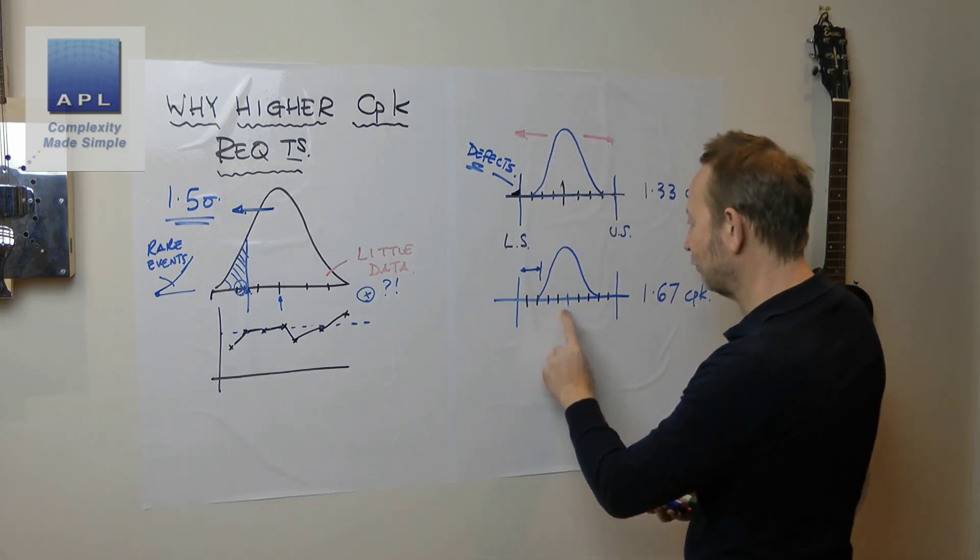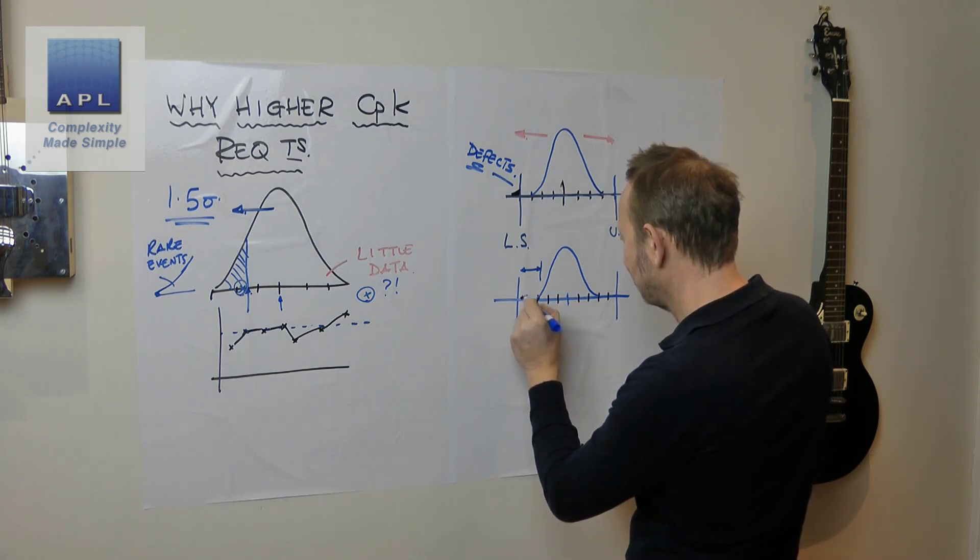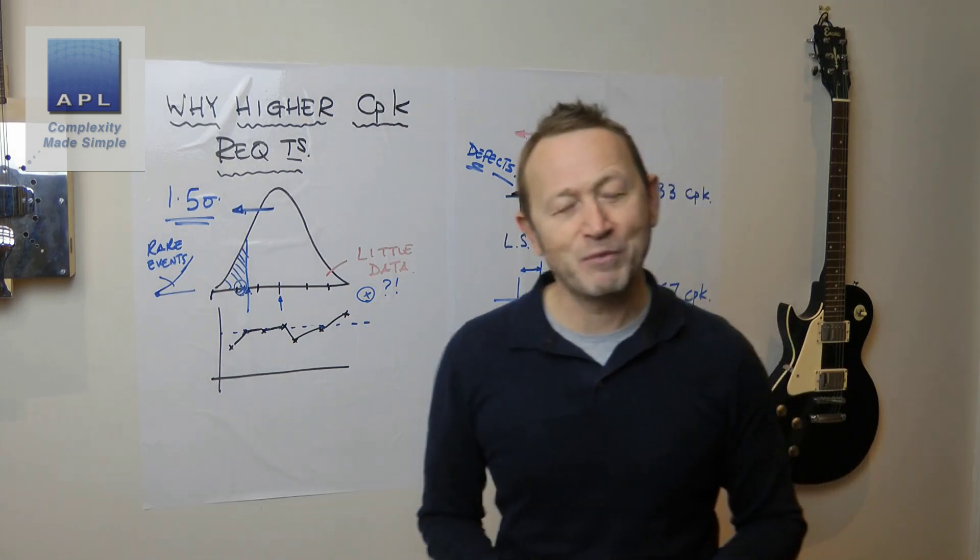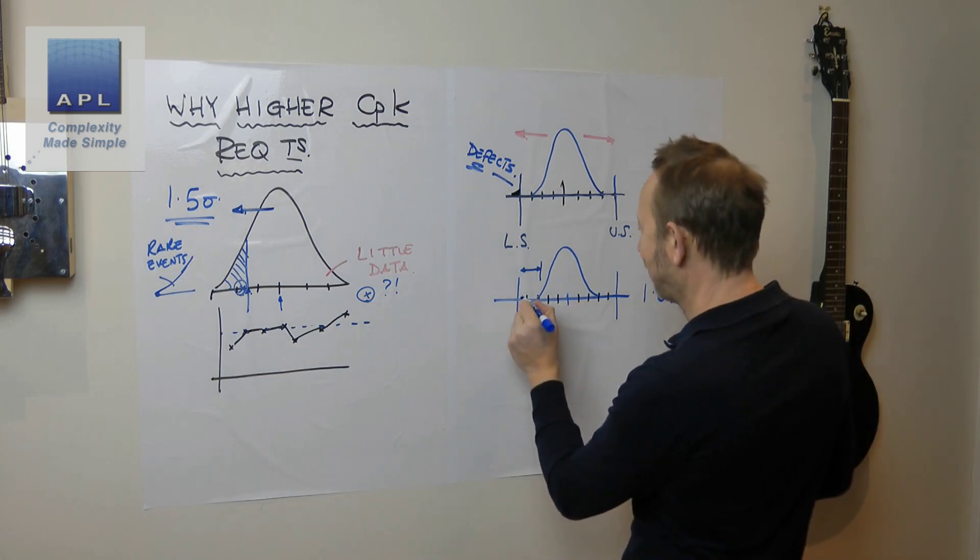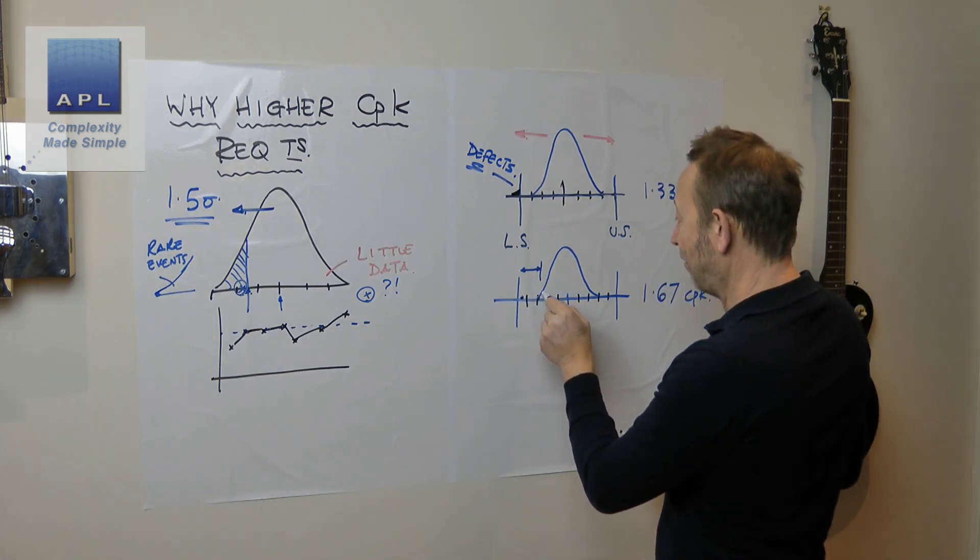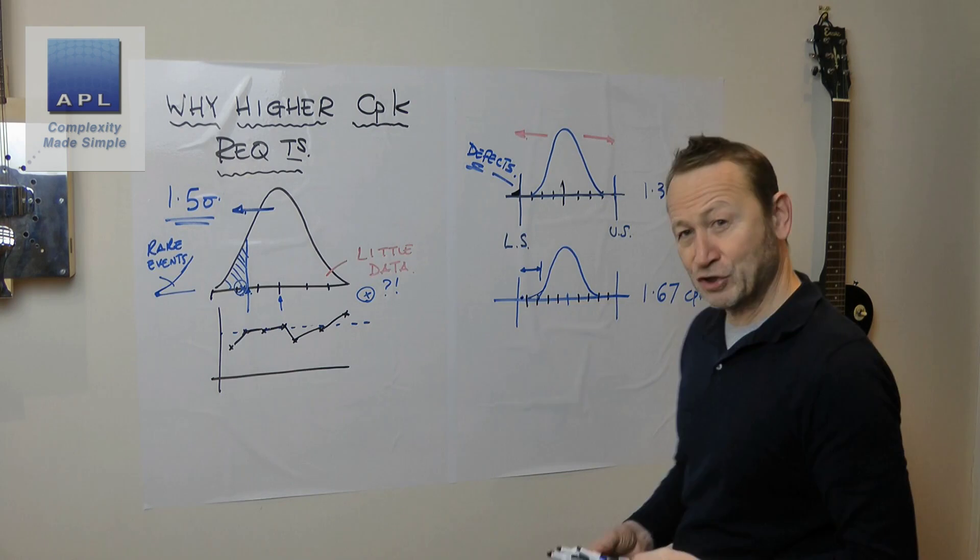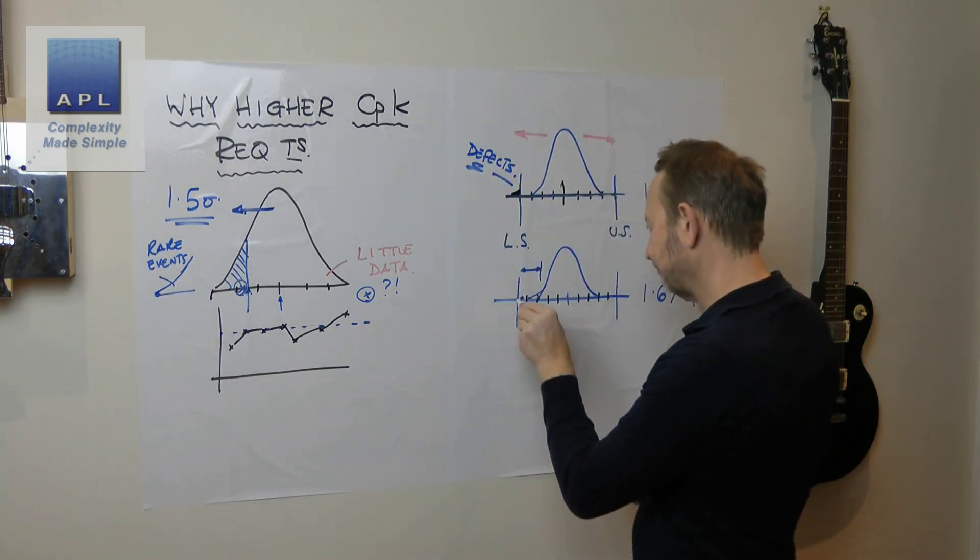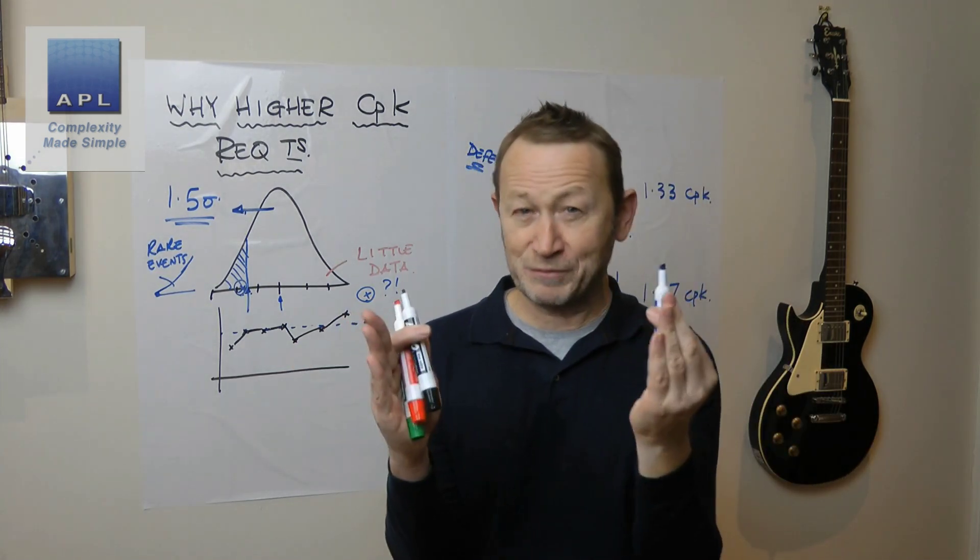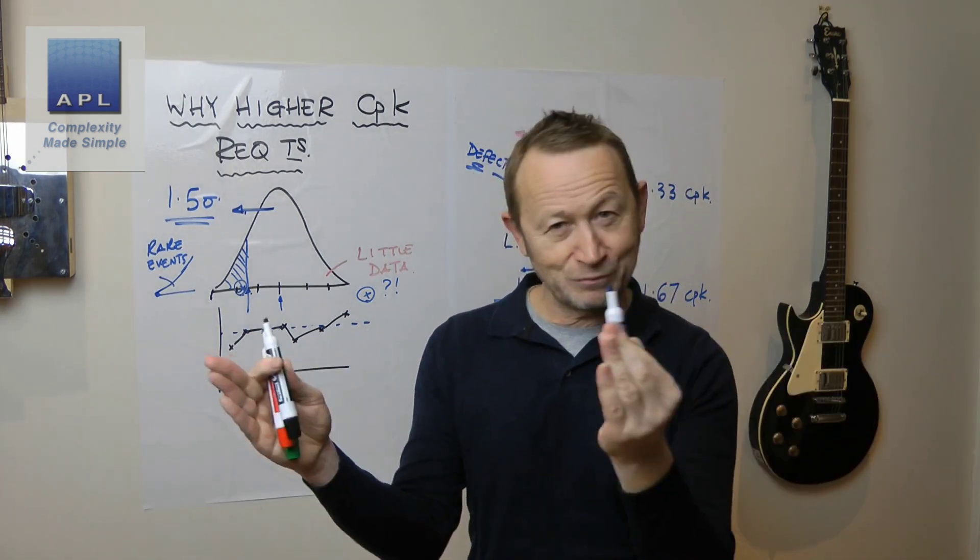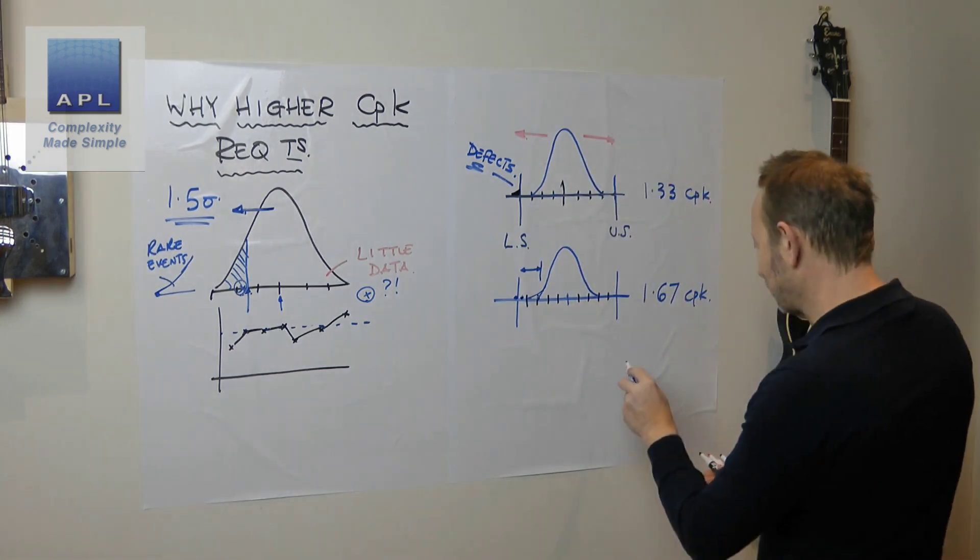If the process moves by one and a half sigmas, what would that mean? This tail would be just short of that bottom tolerance by half a standard deviation. Obviously, this distribution does keep going - statistically it keeps going, it never touches the line. So there is some danger that we might still get some defects out there because we're only half a sigma potentially away from that bottom or top tolerance.